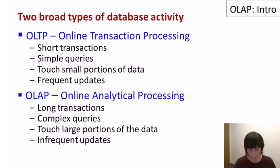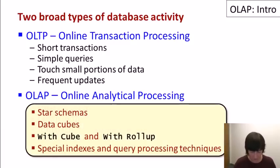So to conclude, there are two broad types of database activity, online transaction processing, short, simple transactions touching small portions of the data, lots of updating. And OLAP, or Online Analytical Processing, where we have complex queries, long transactions, might touch a large portion of the data, and might not update the data at all.